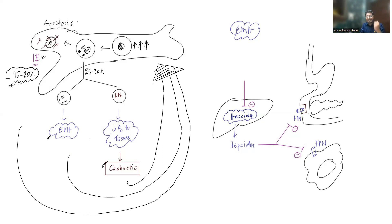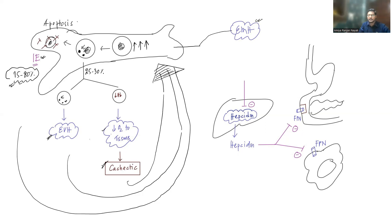So there is increased RBC precursor production. As seen in other hemolytic anemias, you will see increased erythroid precursors in the bone marrow. There are two consequences: and as I've discussed previously, this will lead to extramedullary hematopoiesis — whenever the bone marrow cannot produce enough RBCs to meet demands, extramedullary hematopoiesis occurs.